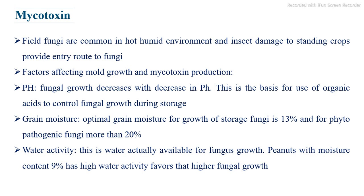Field fungi are common in hot, humid environments, and insect damage to standing crops provides an entry route for fungi. Factors affecting mold growth and mycotoxin production include pH — fungal growth decreases with decrease in pH, which is the basis for use of organic acids to control fungal growth during storage. Optimal grain moisture for storage fungi is 13%, and for phytopathogenic fungi more than 20%. Water activity is the water actually available for fungal growth; peanuts with moisture content of 9% can have high water activity favoring higher fungal growth.